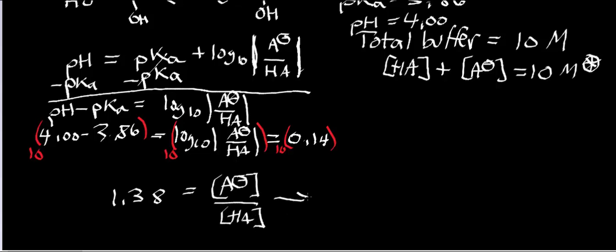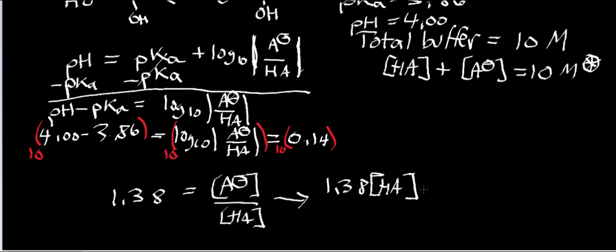Now I can multiply both sides by [HA], giving us 1.38 times the concentration of HA equals the concentration of A-. Before we actually solve this, let's have some intuition.